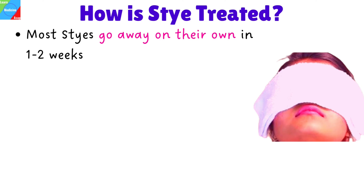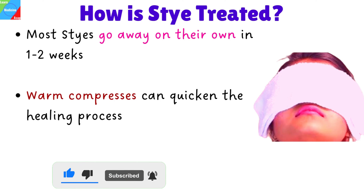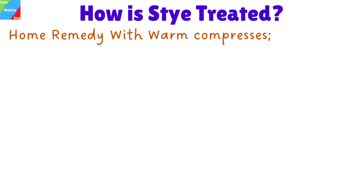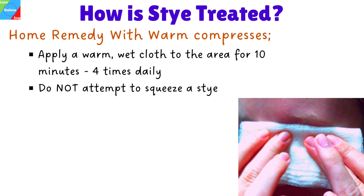How is stye treated? Most styes go away on their own in one to two weeks without the need for any medical intervention. However, recurrences are common. A simple home remedy using warm compresses can quicken the healing process. Warm compresses may help to ease soreness and release pus more readily. Apply a warm, wet cloth to the area for 10 minutes — the water should be warm and comfortable, not scalding. Do this four times a day. Eventually the stye will pop and drain on its own. Do not attempt to squeeze a stye or any other type of eyelid bump; let it drain on its own.